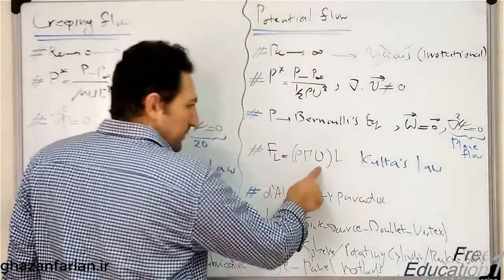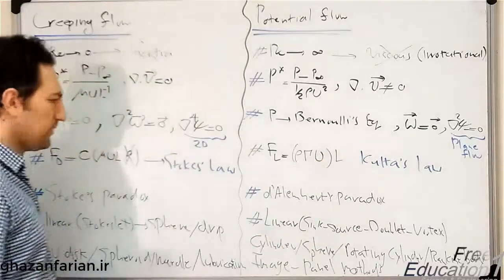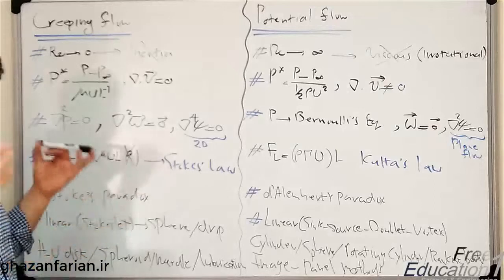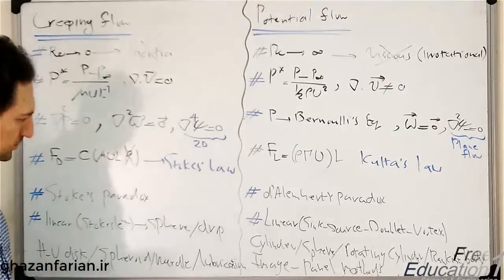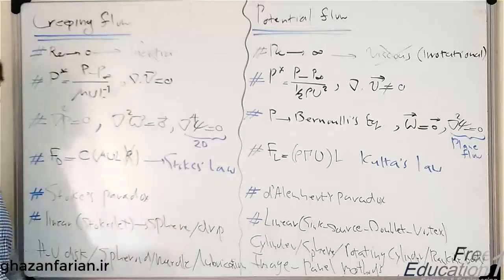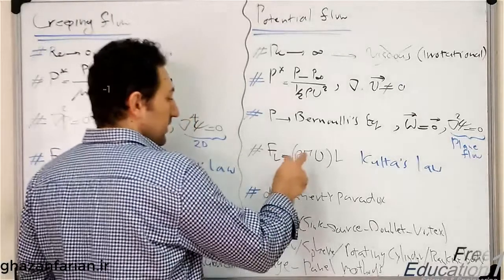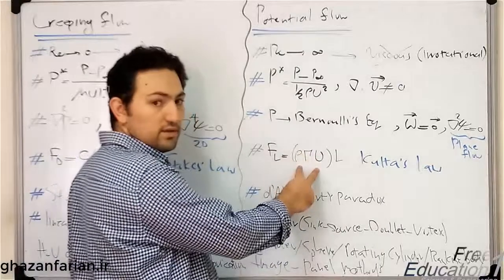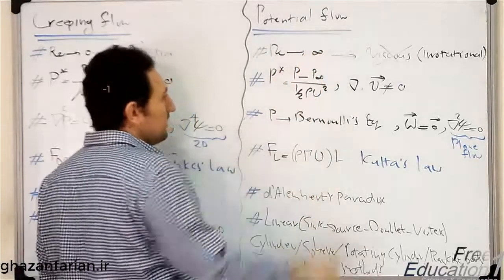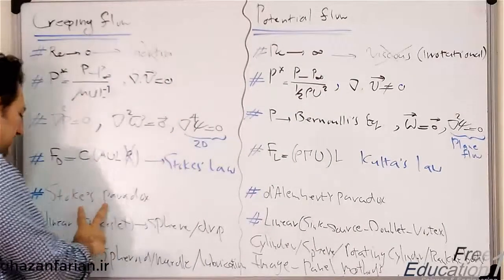This is called the Kutta's condition or the Kutta's law for the lift force, which Stokes law is for the drag force. Again, you see the viscosity disappears in this relation because the viscous forces are negligible in creeping flow. We have a paradox which is called the Stokes paradox.